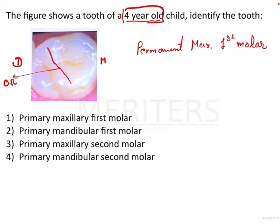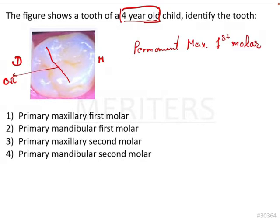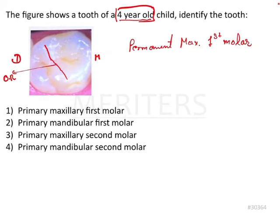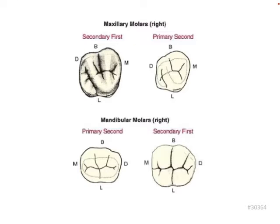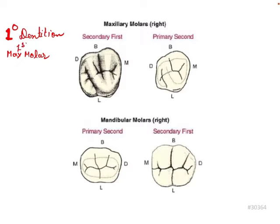So how do we approach this? There is a very important concept: certain teeth in the permanent dentition are resembled by certain primary molars. In the primary dentition, the primary maxillary first molar is represented by — or resembles — the permanent premolars.